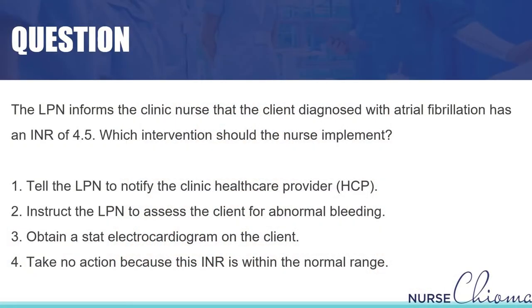One of the biggest things is knowing what you can and cannot do — what has to be moved up the chain of command. Looking at it backwards: number four is out because it's not normal range. Number three — getting a stat EKG — an INR of 4.5 does not warrant a stat EKG. You get a stat EKG if troponin levels are elevated, not if the INR is elevated. Number two — telling the LPN to check the client for abnormal bleeding — could be a very important assessment, but because the level is as high as it is, it's a greater priority to let the physician know.